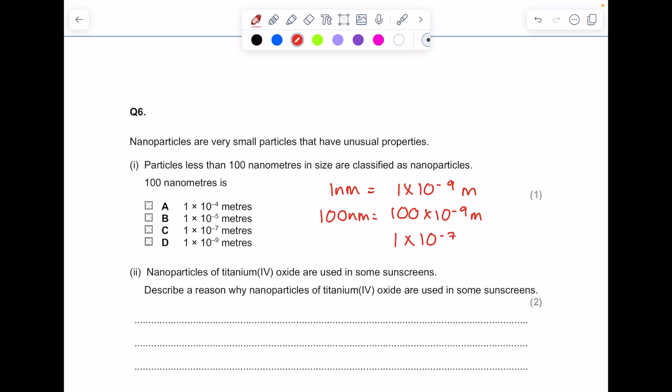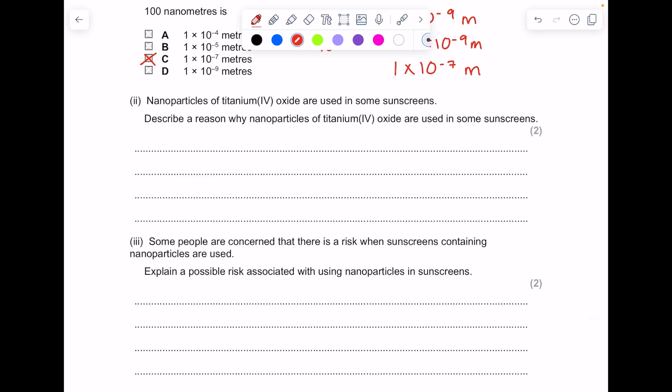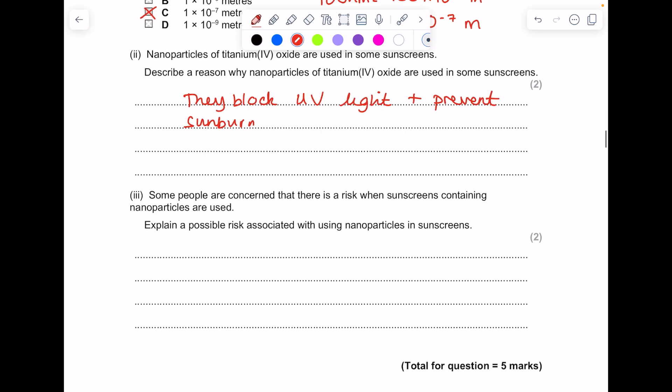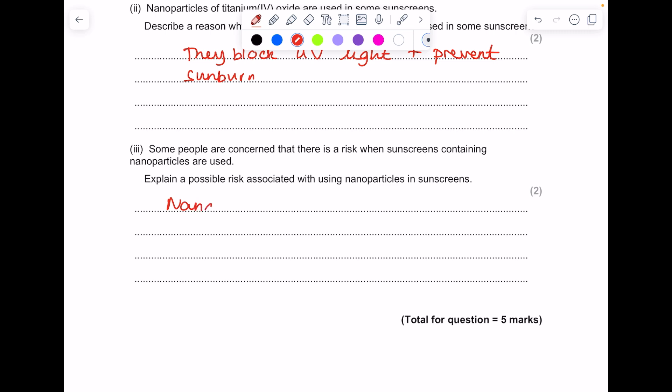Nanoparticles such as titanium dioxide are used in some sunscreens. Describe a reason why nanoparticles are used in some sunscreens: because they block UV light and prevent sunburn. Some people are concerned that there's a risk when sunscreens containing nanoparticles are used. Explain a possible risk associated with using nanoparticles in sunscreens. So we said that nanoparticles may enter cells; their long-term effects are unknown as they are a new technology.